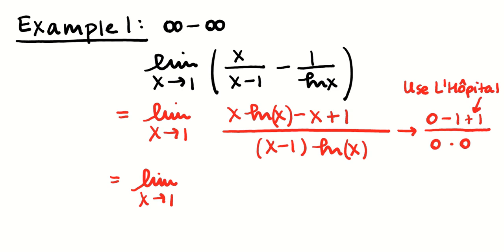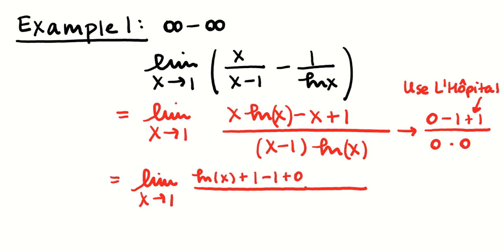I'm going to take the derivative of the top and the bottom — it's just going to be a little more involved than the usual AP calculus one. Take the derivative of x, that's 1, leave log(x) the same, then add in leaving x the same and multiplying by the derivative of log(x), which is 1/x times x, giving 1. The derivative of negative x is negative 1, and the derivative of plus 1 is 0. Then in the denominator, leave (x minus 1) the same, multiplied by the derivative of log(x).